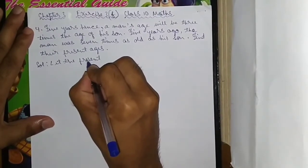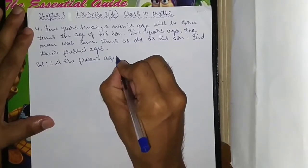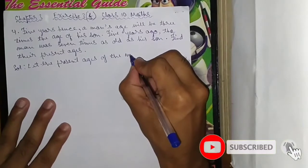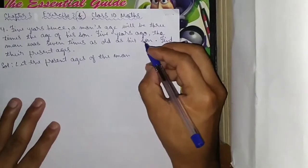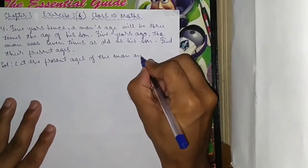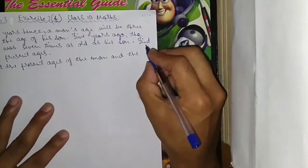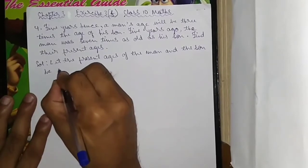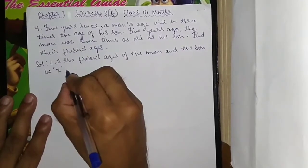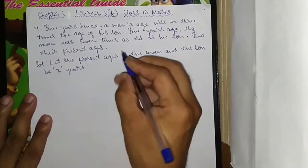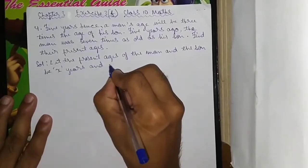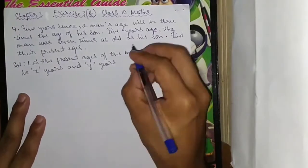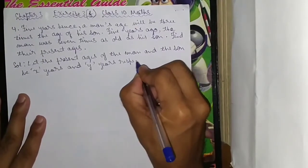Let the present ages of the man and the son be X years and Y years respectively.